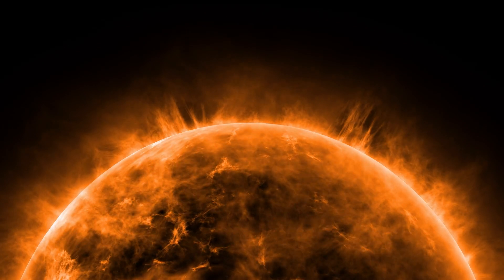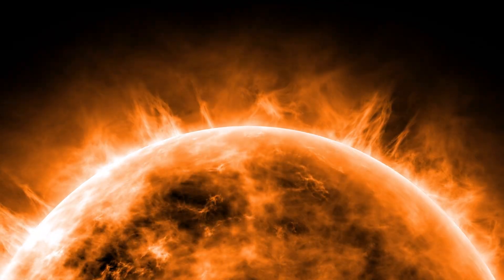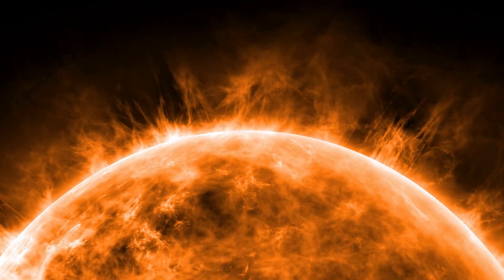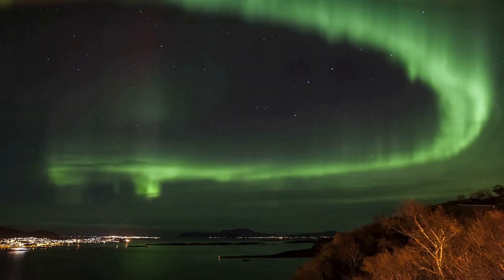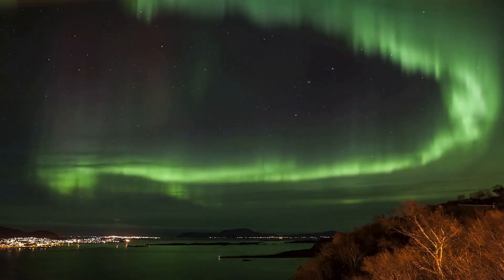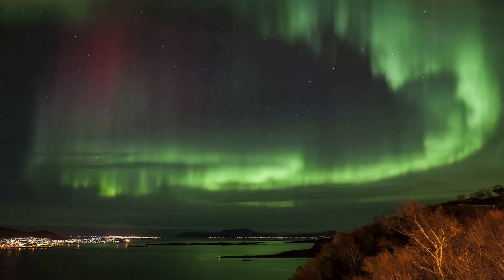On February 26-27, an incoming solar wind stream from the Sun's equatorial region is expected to arrive at Earth. This stream of solar wind could potentially spark a minor G1-class geomagnetic storm.